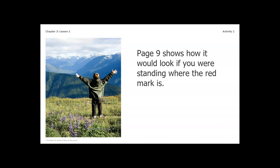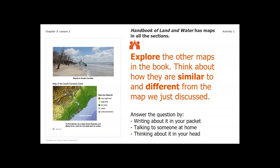Page nine shows how it would look if you were standing where the red mark is. You can see you're overlooking from pretty high up — you're not seeing a bunch of water, but you are seeing some more of those mountain peaks. We're going to explore the other maps in the book and think about how they are similar to and different from the map we just discussed. Pause this video and go to the YouTube video for the Handbook of Land and Water, then answer the question in your packet. You can use any map you see in that handbook — there are so many to choose from.